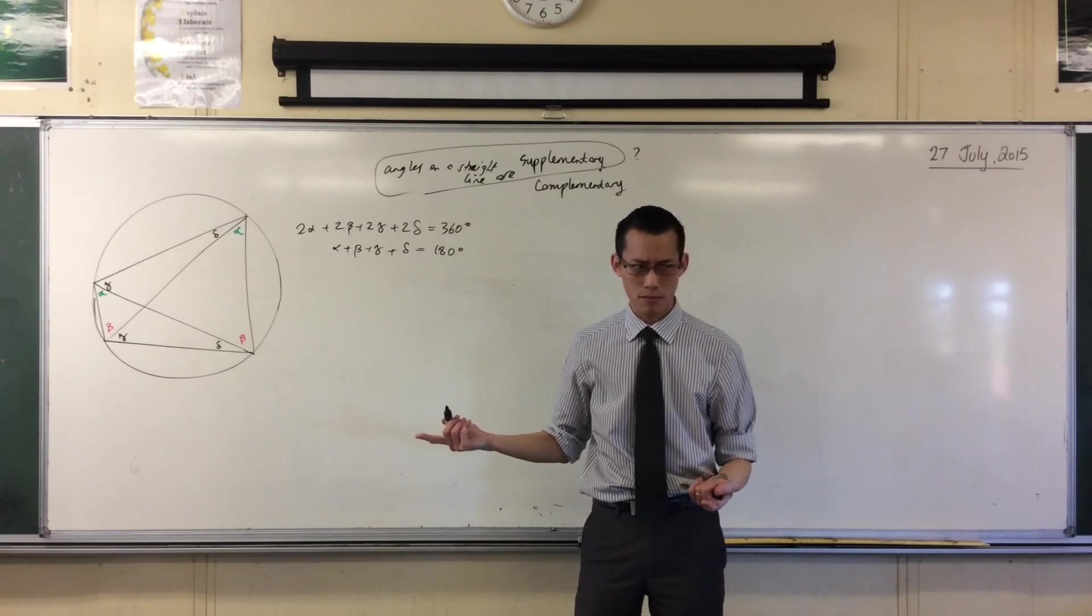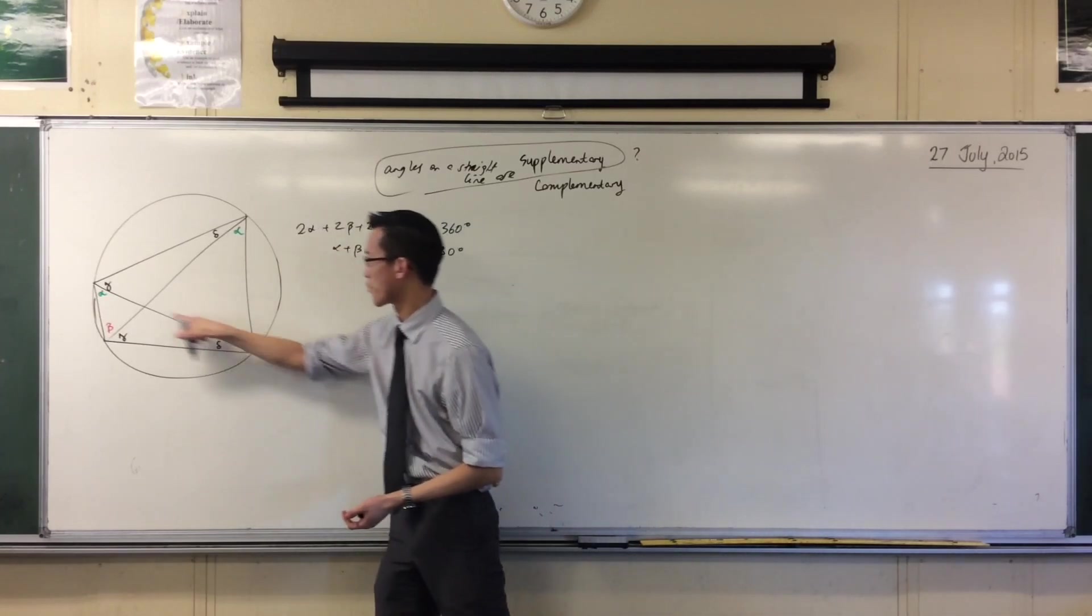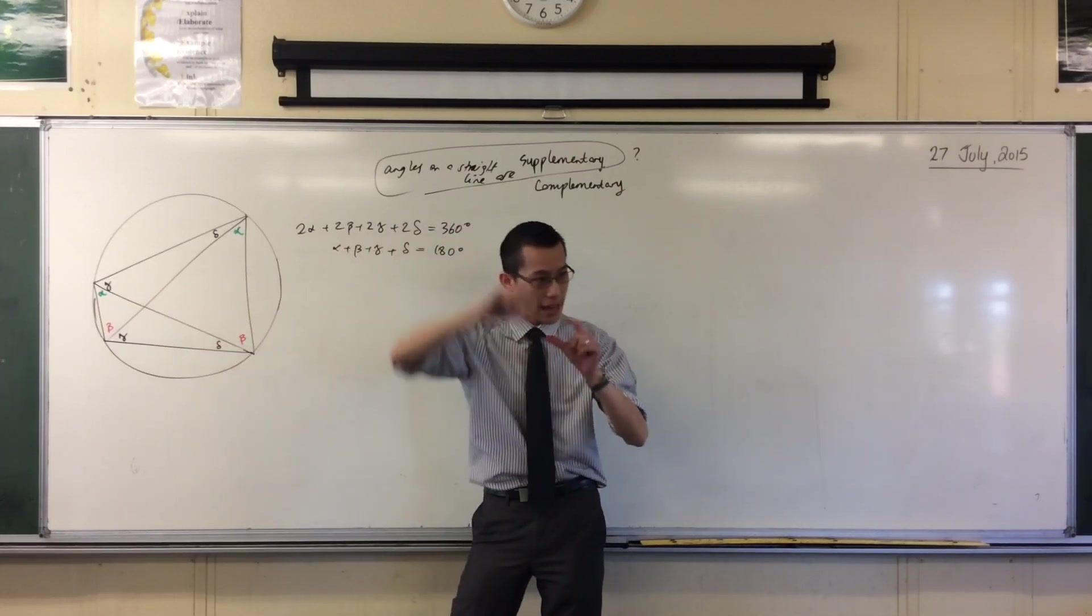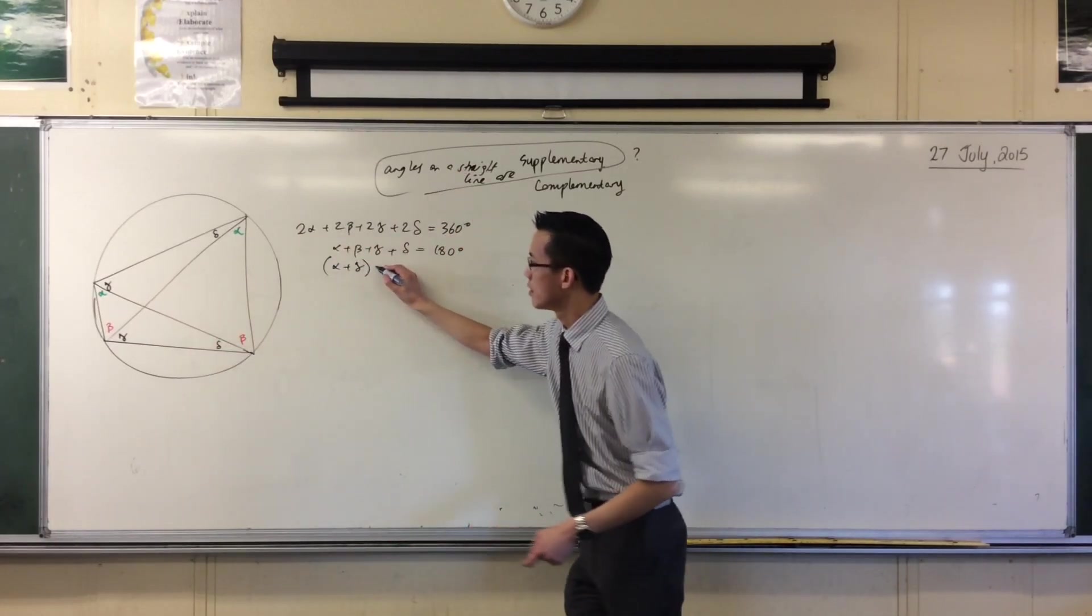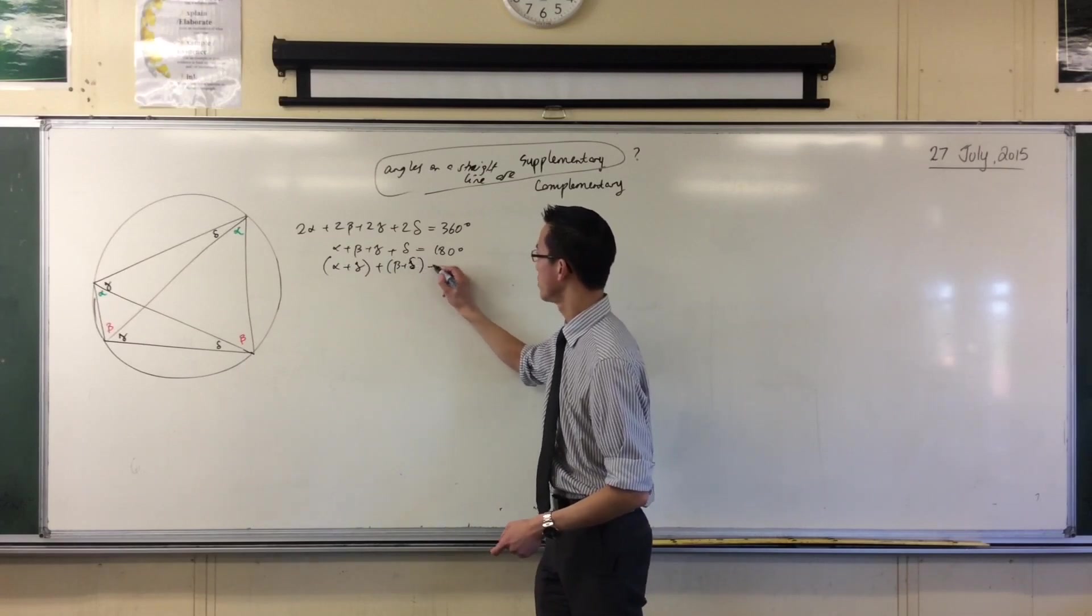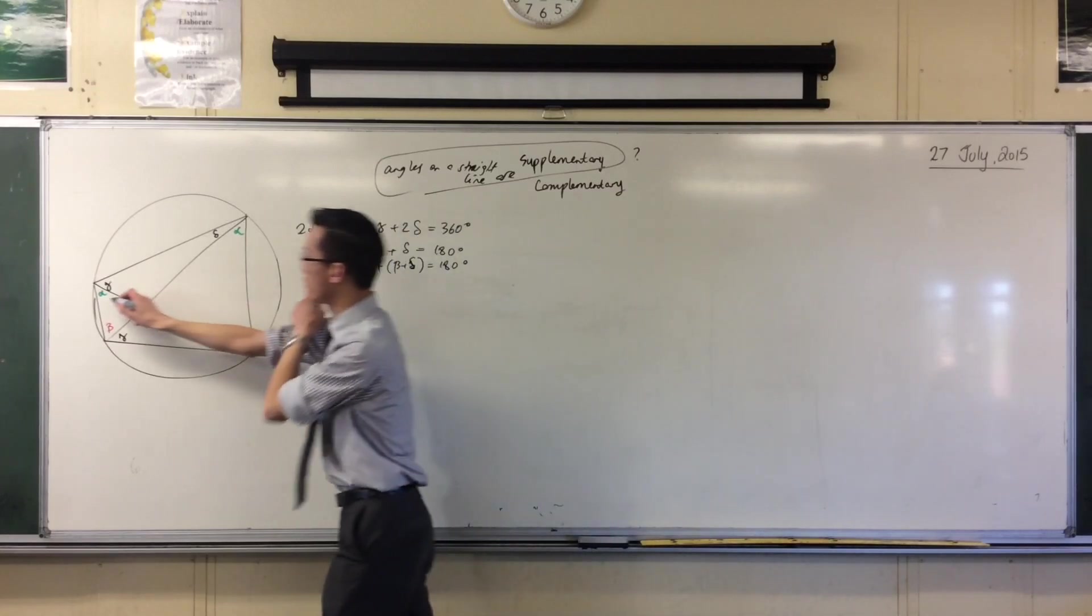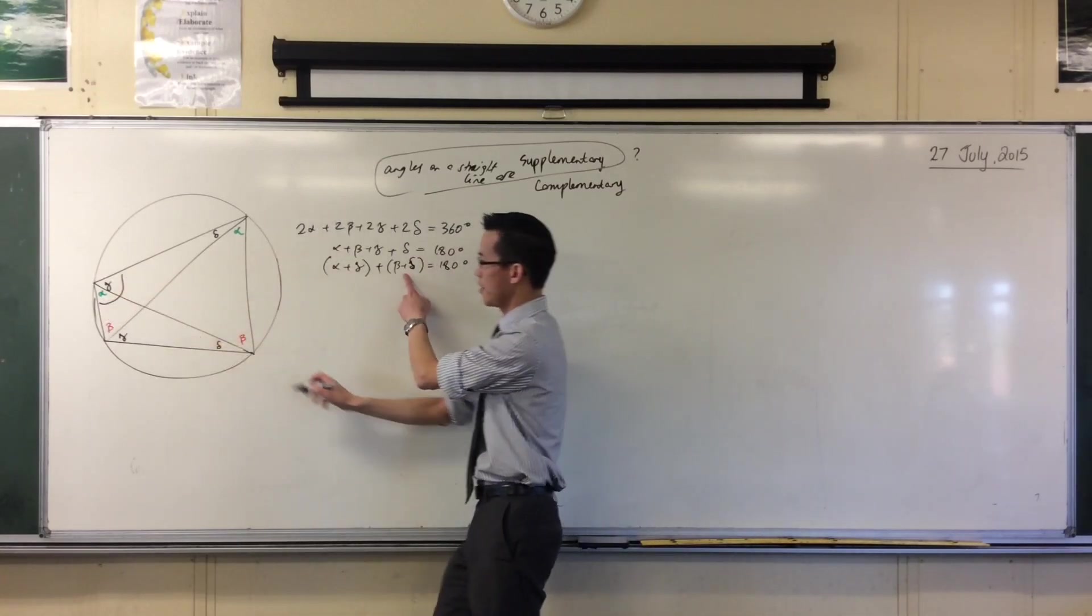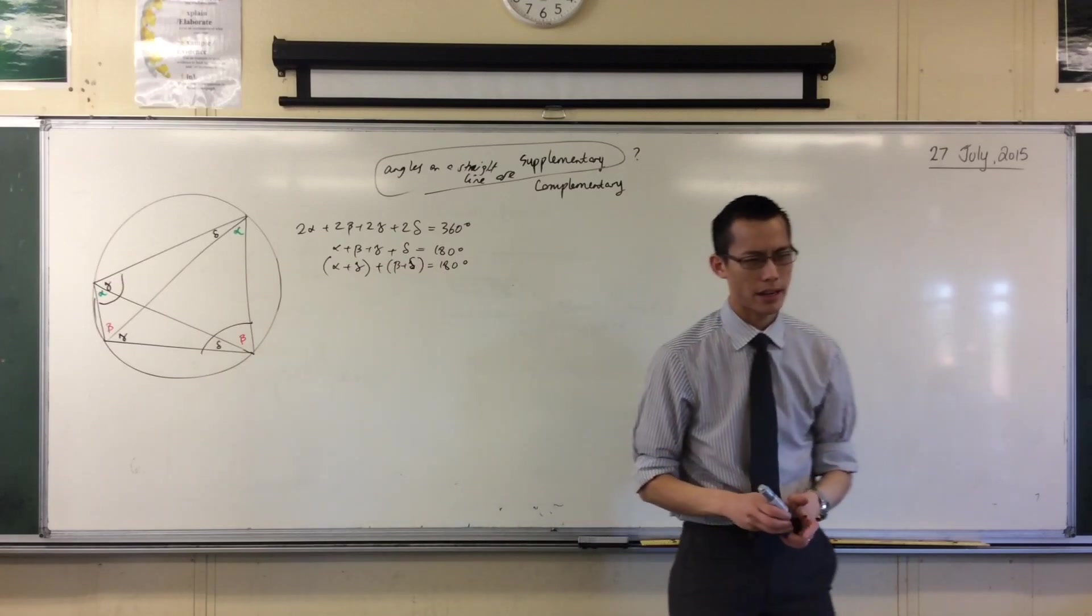But you can see, right? Alpha plus beta, there's alpha and beta, there's gamma plus delta. They're the opposite angles. If I just rearrange a little bit, plus, bigger, oops, delta. Okay. There you go. There's this angle over here and there is this angle over here. Right? So that's it. They're supplementary. I've added them all. Okay?